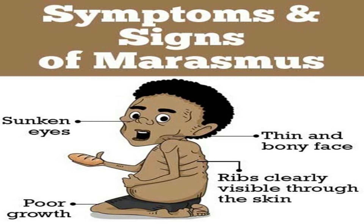Other symptoms and complications of marasmus include dehydration, electrolyte imbalance, low blood pressure, slow heart rate, low body temperature, gastrointestinal malabsorption, stunted growth, developmental delays, anemia, osteomalacia, and rickets.